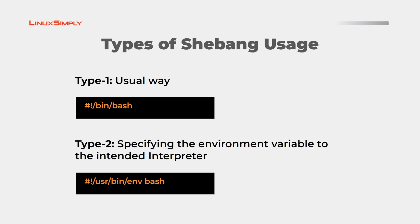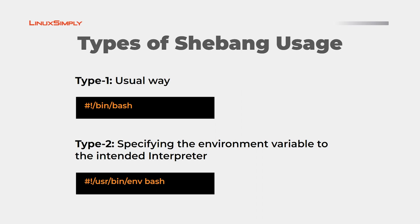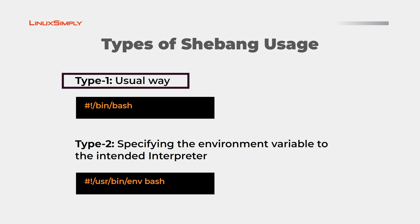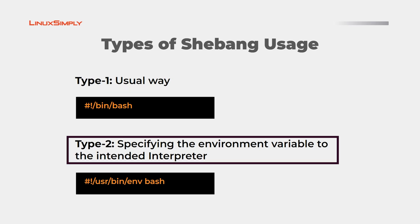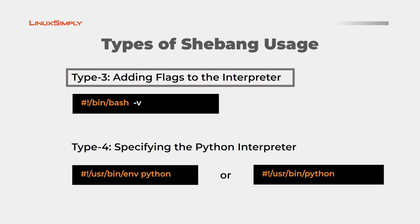Now I will talk about the four different types of shebang. Type 1 is the usual way — using /bin/bash as the path to your interpreter, which will use the bash interpreter to execute the script. Type 2 is specifying the environment variable to the interpreter. This is done because /bin/bash is not always the path to the bash shell.